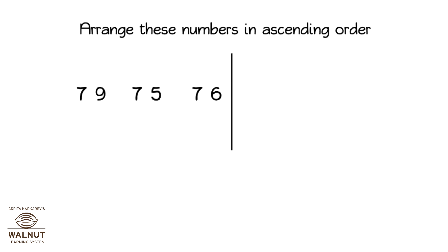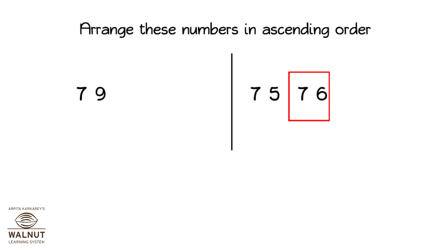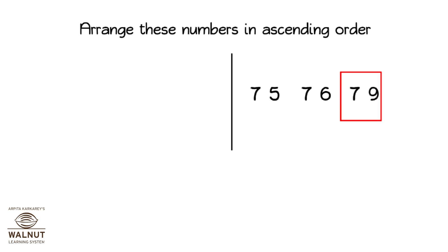Arrange these numbers in ascending order. 75 — we will go first. 76 — we will go second. 79 — we will go third.